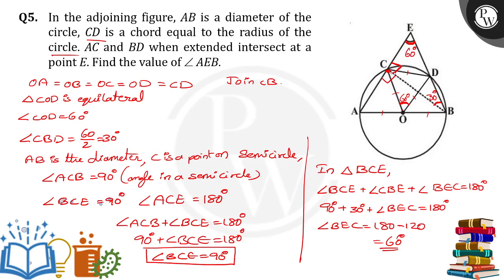This angle is not only at B — we can also refer to it as angle AEB. So we got angle E equal to 60 degrees. Thank you.